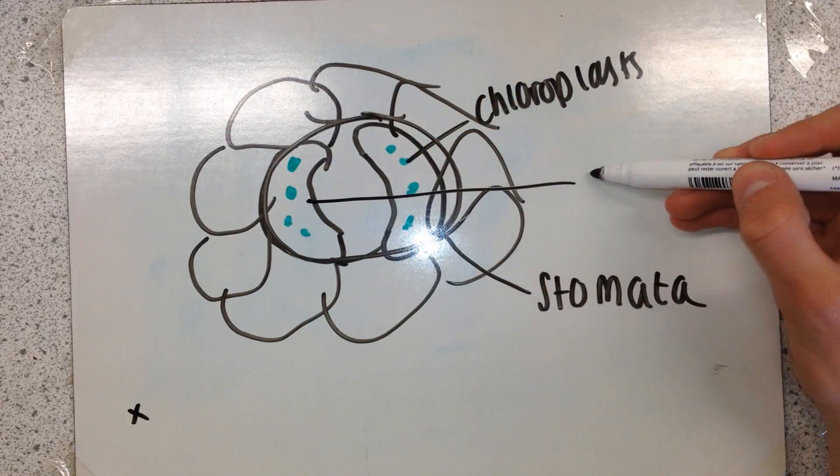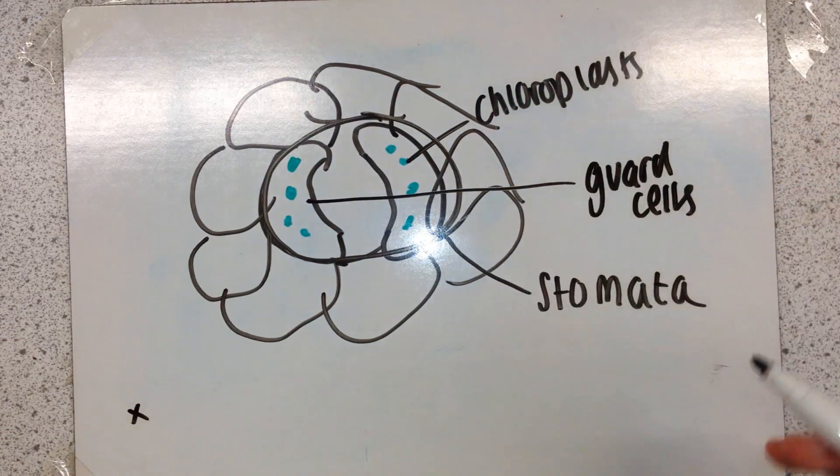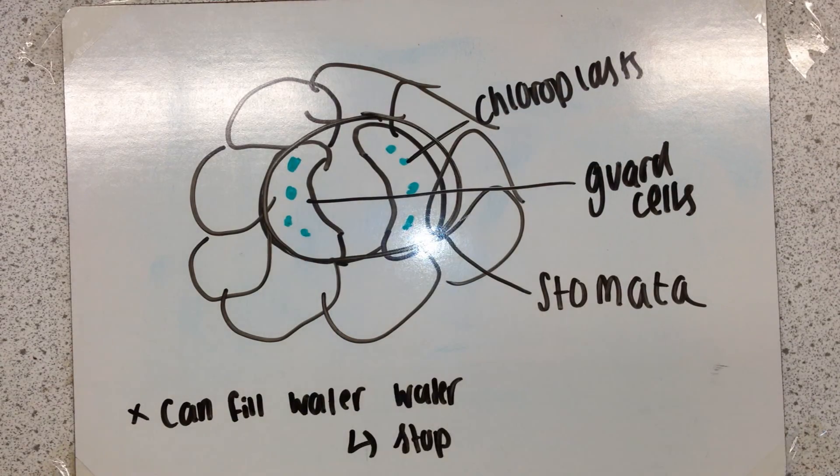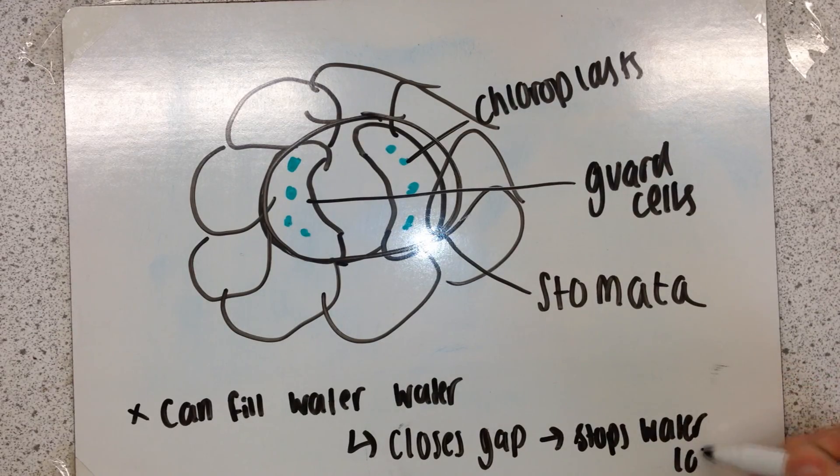This here is a guard cell. The stomata is made from two guard cells shaped like bananas. These guard cells can fill with water, and when they fill with water it closes the gap and stops water being lost from the plant.